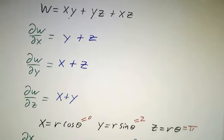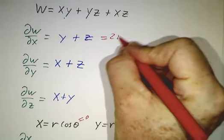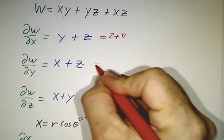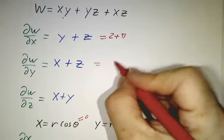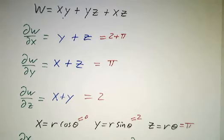Let's go back and plug in our values. y + z = 2 + π, x + z = 0 + π, and x + y = 0 + 2. Now we have all of the data that we need for plugging in.